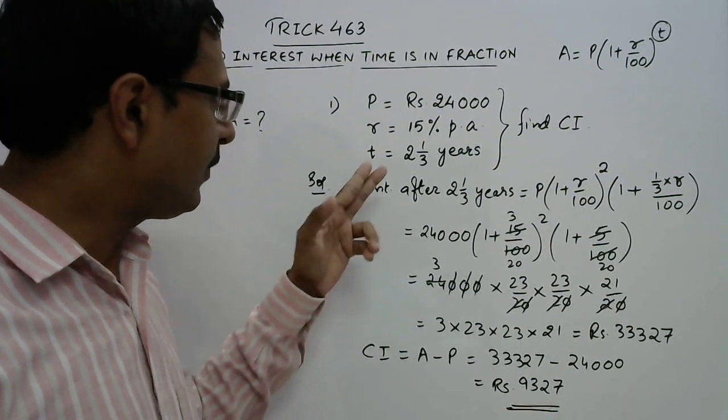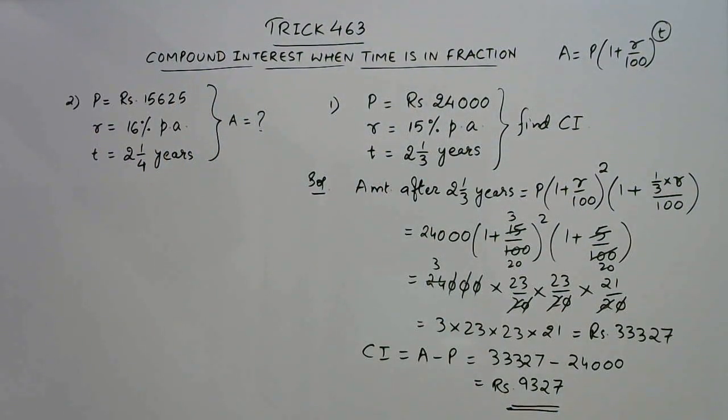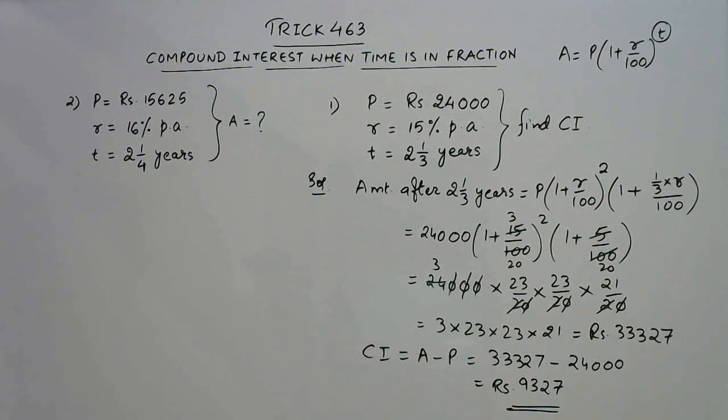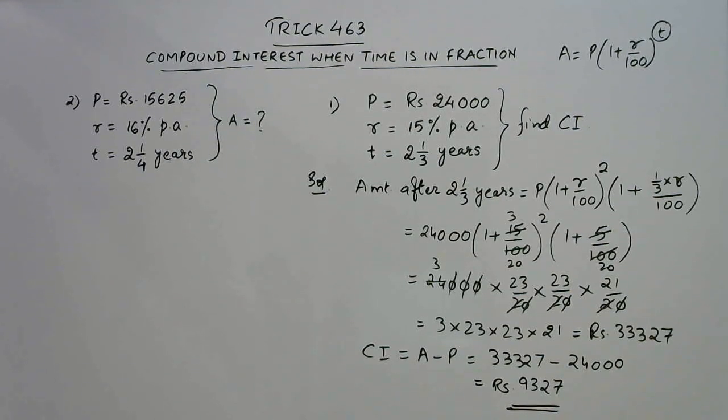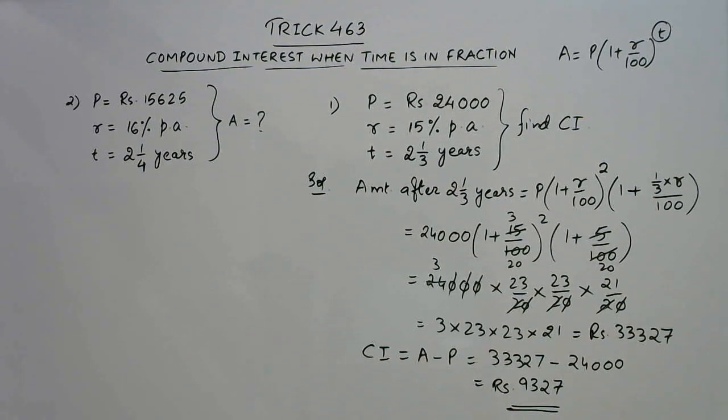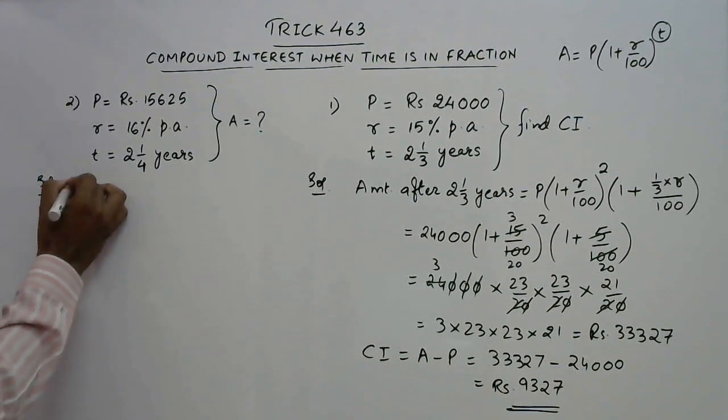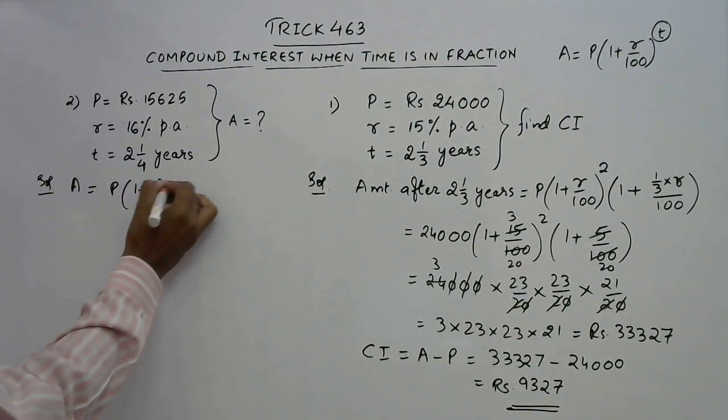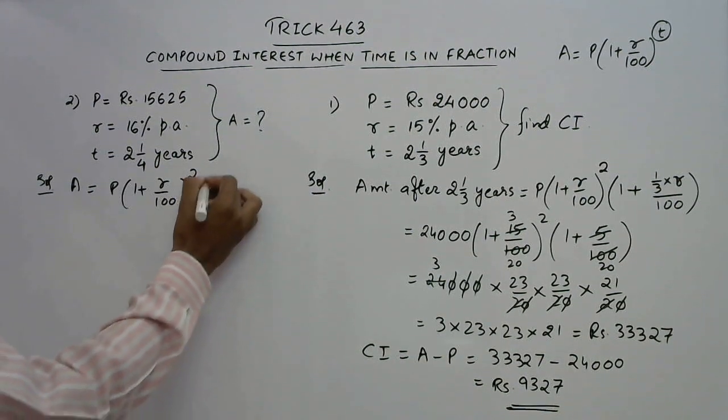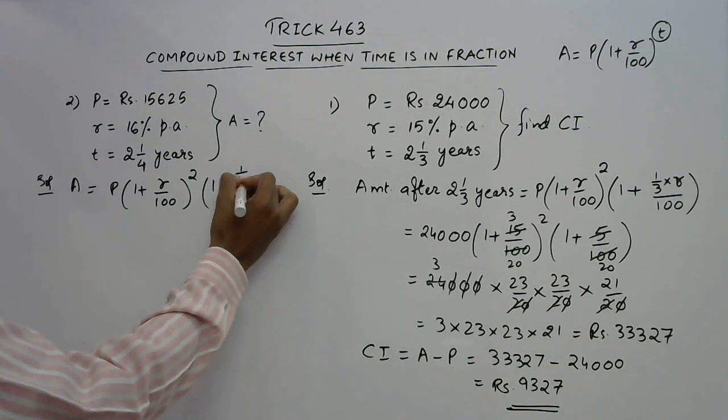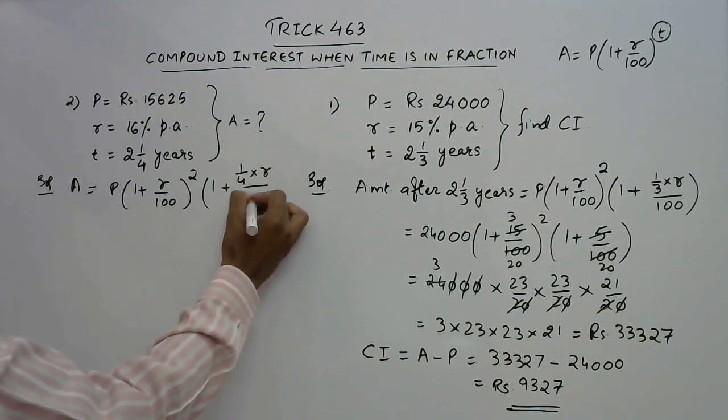Now let us apply the same result for solving yet another question. This time we have the principal given as rupees 15625, rate of interest is 16% per annum and the time given is 2 1/4 years. Again amount will be calculated as P into 1 plus r upon 100 raised to power clear years, and 1 plus the fraction will come as the coefficient of r in the second bracket.